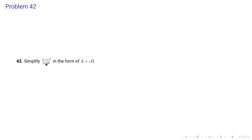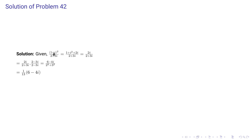Problem 42: simplify (1+i)^2 / (2+3i) in the form a + ib. Expanding the square: 1 + i^2 + 2i. Since i^2 = -1, the +1 and -1 cancel, leaving 2i / (2+3i). Multiplying numerator and denominator by the complex conjugate (2-3i), the numerator becomes 6 - 4i and denominator is 4+9=13. The result is (1/13)(6 - 4i).